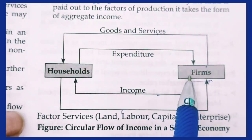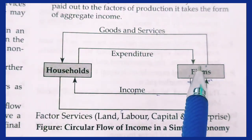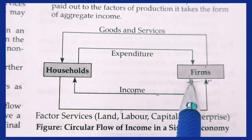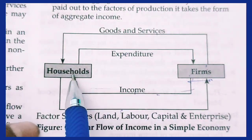The production output of firms becomes income for households. This creates a circular flow between households and firms.